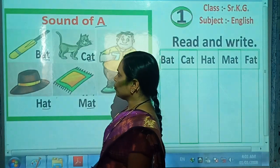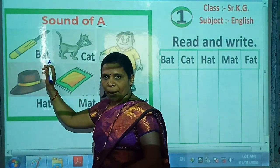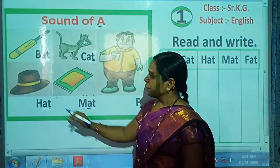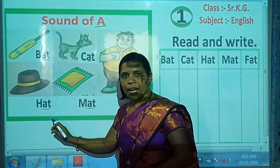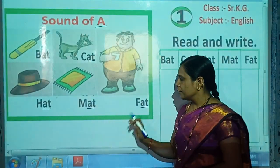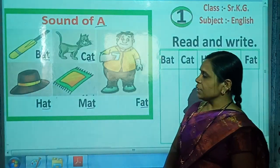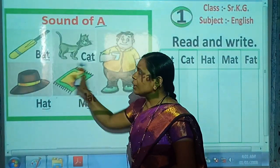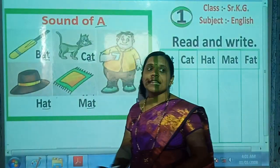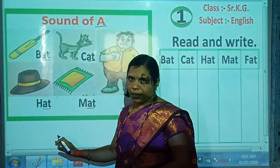Once again, let's read them all: B-A-T, bat. C-A-T, cat. H-A-T, hat. M-A-N, man. F-A-T, fat. Students, look carefully at all these words — the sound 'A' is pronounced as 'A' in each word.